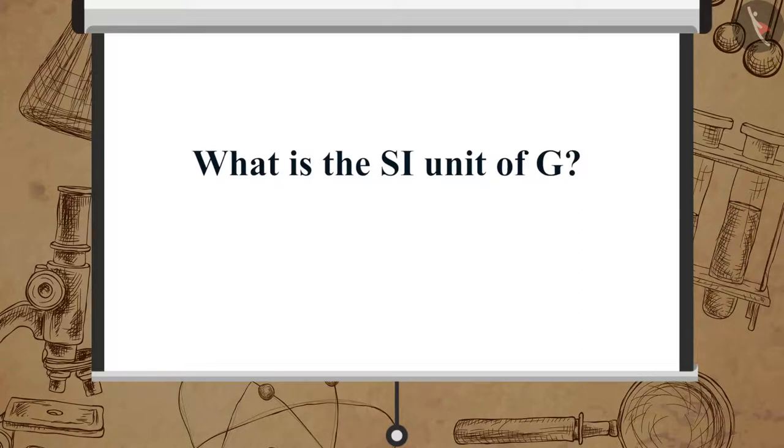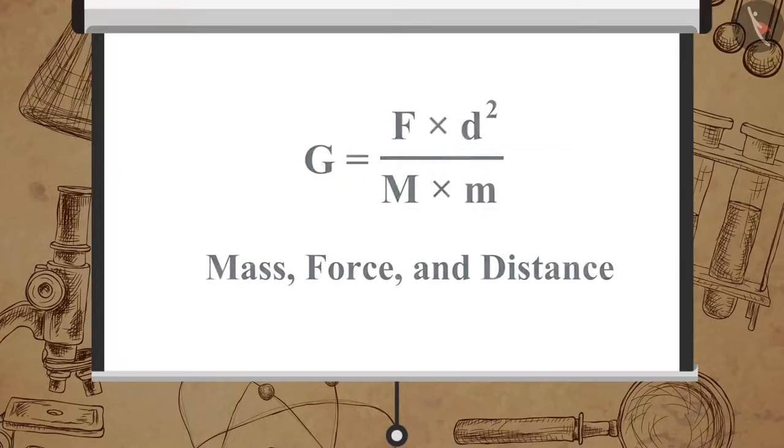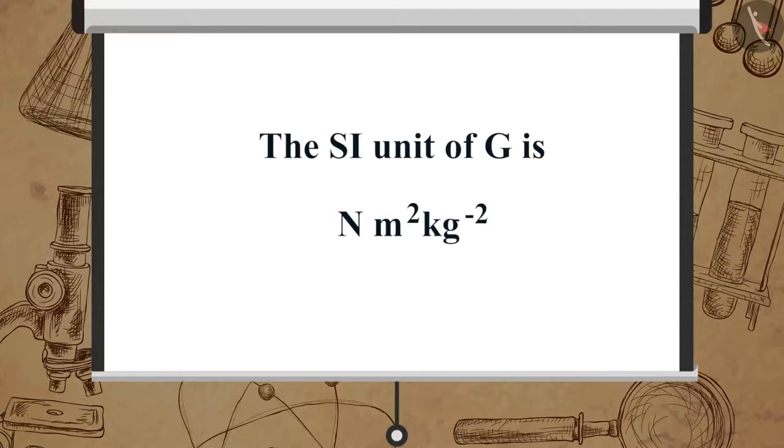Can you determine the SI unit of G from the previous equation? We can find the SI unit of G by substituting the units of mass, force and distance in this equation. The SI unit of G is Newton meter square per kilogram square.